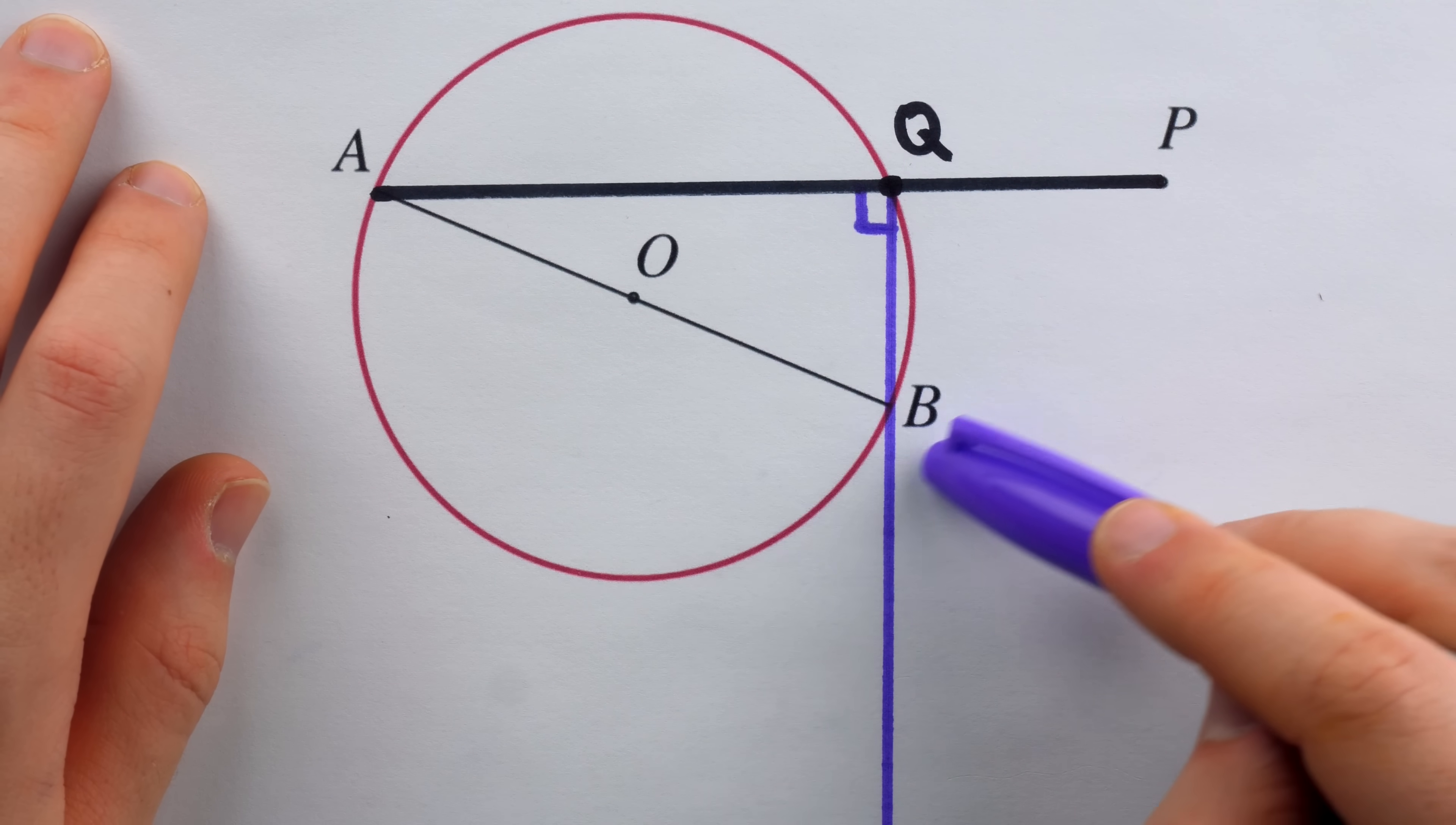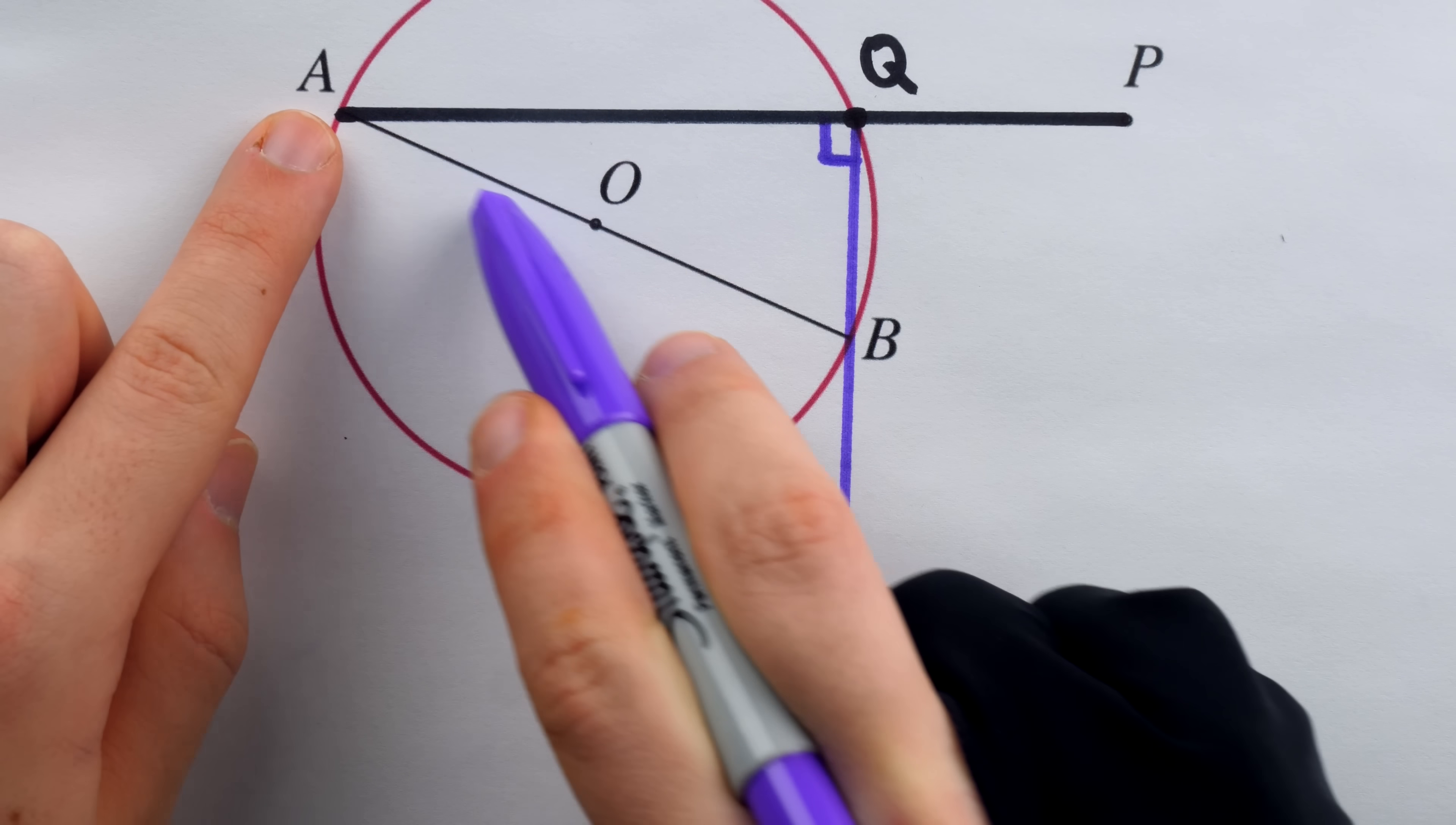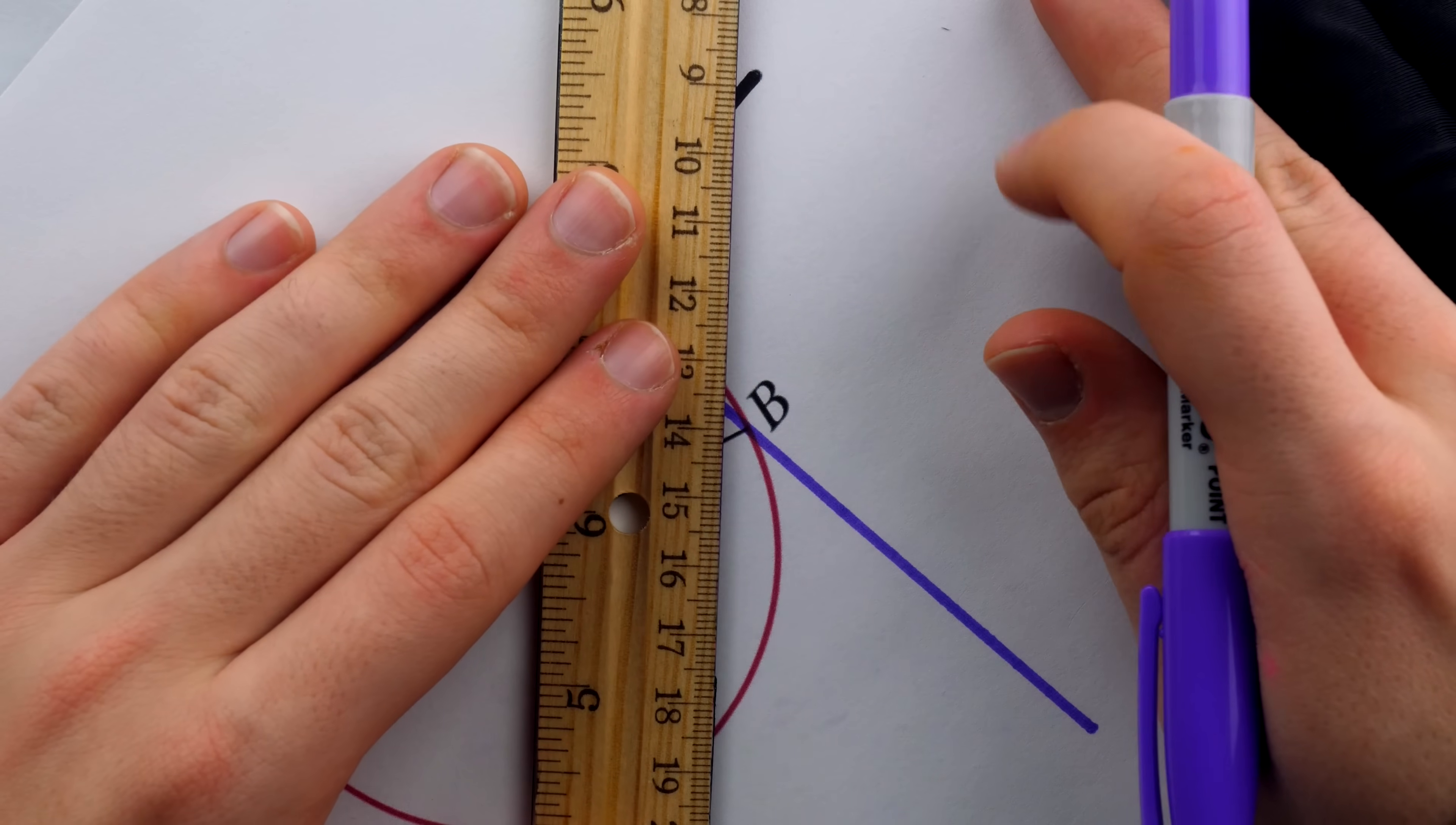Now the idea is we're going to want B to be the orthocenter of our triangle we're constructing. That way, this segment is going to be an altitude of our triangle. We're going to have an altitude coming from P and the line passing through AB will be an altitude to this other side that comes from P. But the next thing we're going to do is draw what is going to be another altitude by drawing the line that goes from P to B.